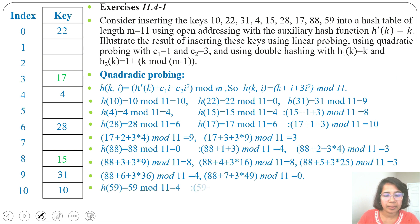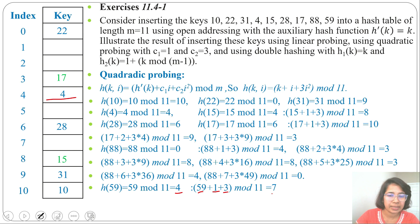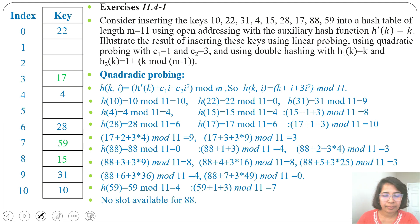Next key is 59: 59 mod 11 is 4, and slot 4 is already filled. For i=1: 59 + 1 + 3 mod 11 is 7, and slot 7 is empty, so insert 59 at slot 7. There is no slot available for 88, but all other keys were successfully inserted into the hash table.